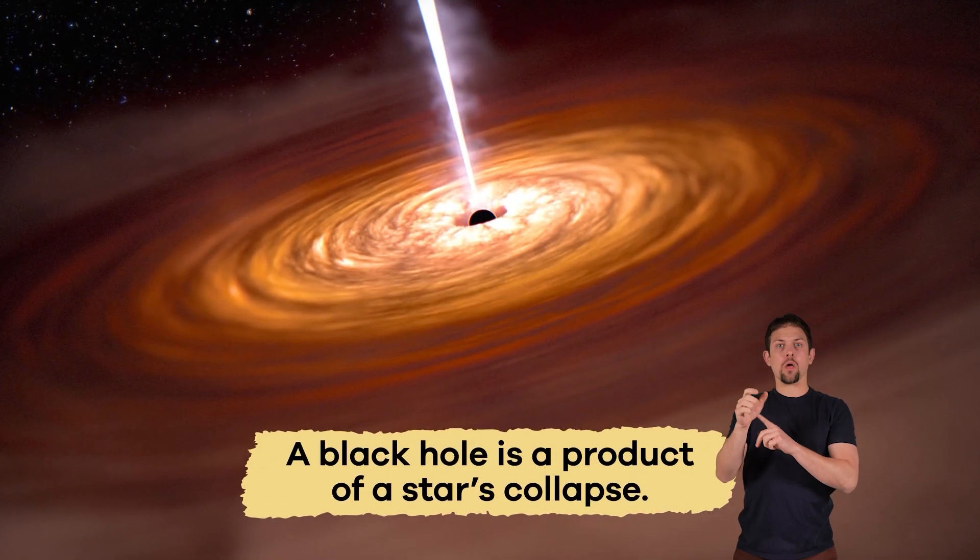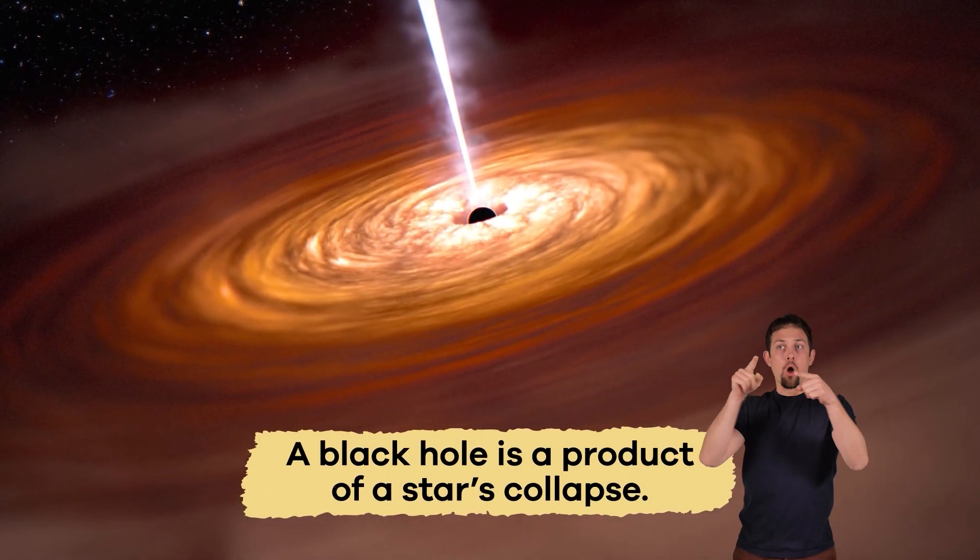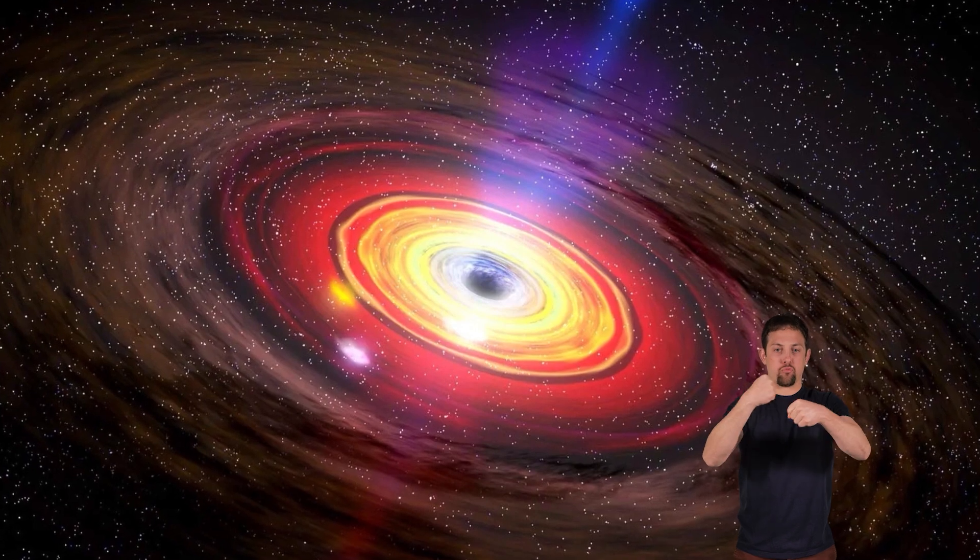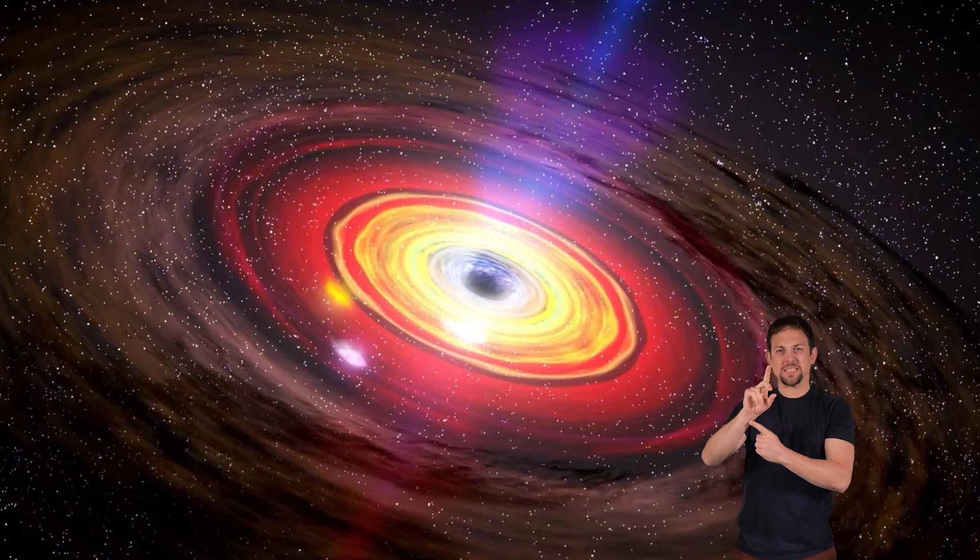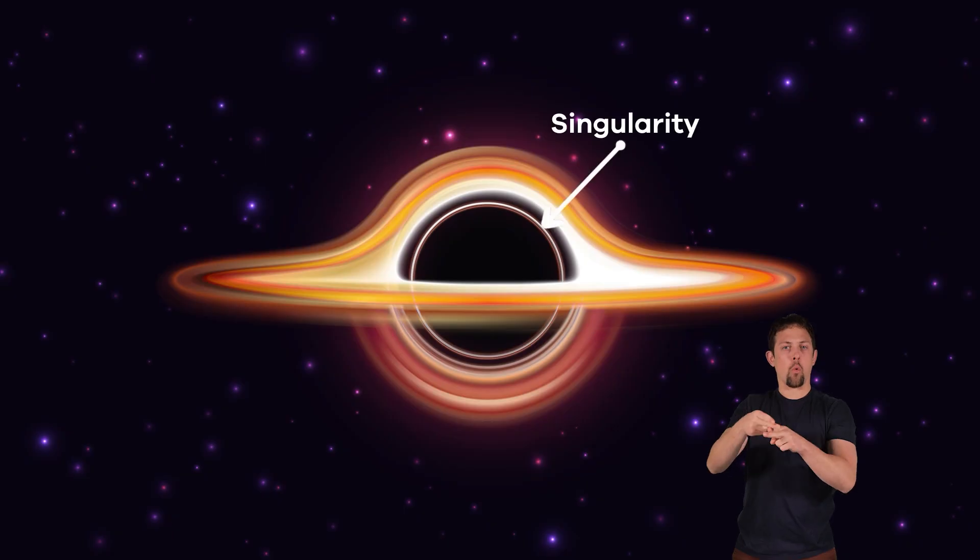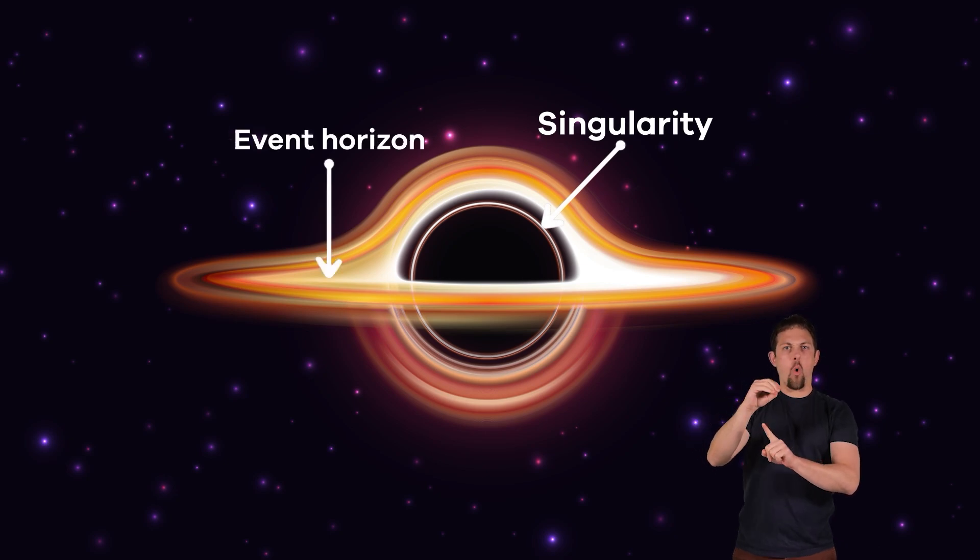A black hole is a product of a star's collapse. This collapse creates a tiny, super dense point called a singularity, which is surrounded by an event horizon.